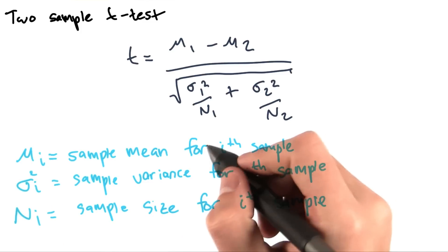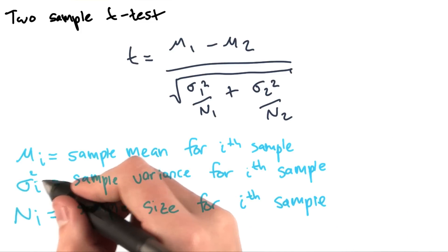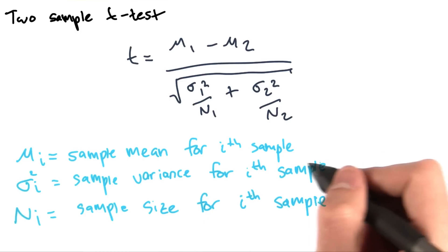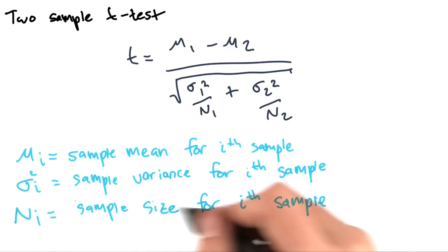Where mui is the sample mean for the i-th sample, sigma squared i is the sample variance for the i-th sample, and ni is the sample size for the i-th sample.